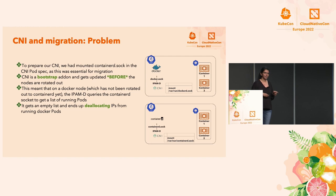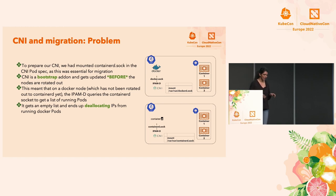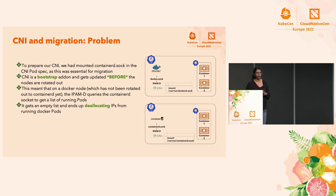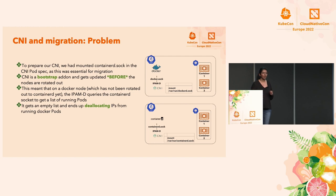To prepare our CNI for the ContainerD migration, we had mounted the ContainerD socket in the CNI pod spec as expected from our CNI vendor. CNI is a bootstrap add-on for us, so bootstrap add-ons get rotated before the nodes get rotated out. This meant that a Docker node would still be running, but the CNI would think this was a ContainerD node, query the ContainerD socket, get an empty list of pods, and start deallocating IPs from Docker pods that were actually live and running. This was a big no-no for us.